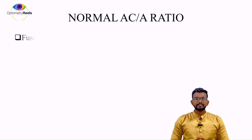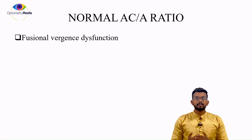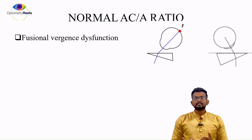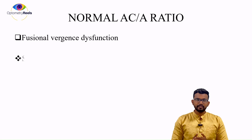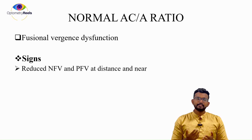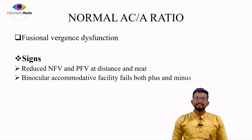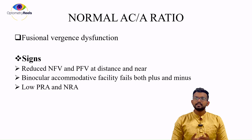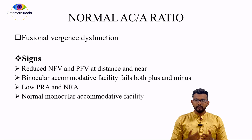Next we are going to talk about normal AC/A ratio, where we are having fusional vergence dysfunction. This means the patient will be having both base-out difficulty and base-in difficulty. The signs of fusional vergence dysfunction are: the patient will be having problems with positive fusional vergences as well as negative fusional vergences, and both accommodative plus and minus lens difficulty binocularly. NRA and PRA will also show difficulty, but the monocular accommodative facility will be normal.